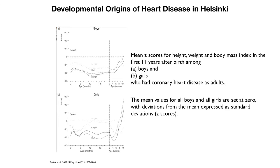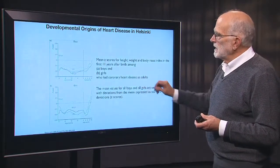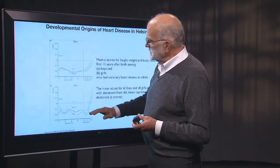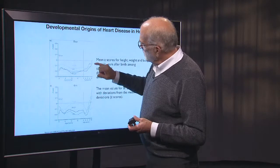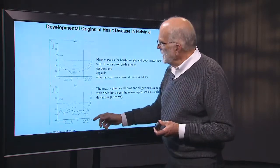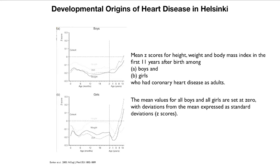In these panels, the top one is for boys and the bottom for girls, showing height, BMI, and weight. The people who had coronary heart disease all had low BMI and low weight in the first two years of life, and they caught up a bit later on. Particularly in the girls, they overshot and became obese during adolescence. So a pattern of being very thin and undernourished during the first two years, followed by overcompensatory catch-up growth, seems to be a pretty good predictor for the risk of coronary heart disease.